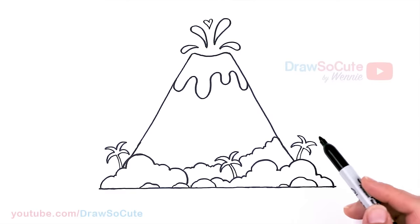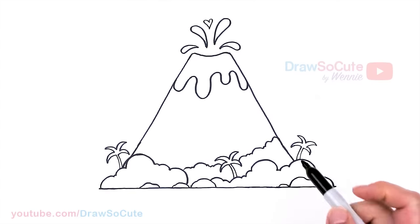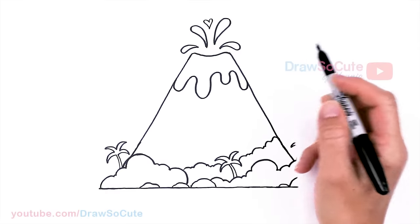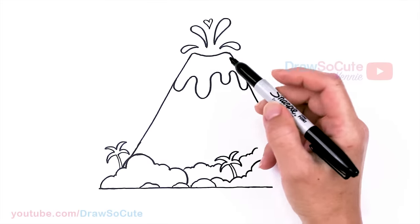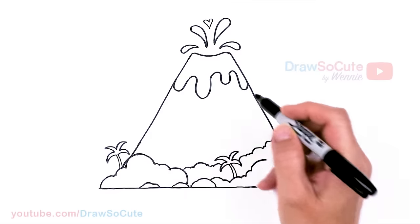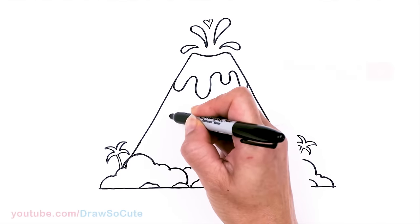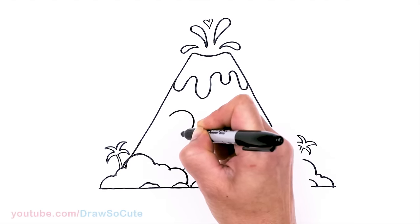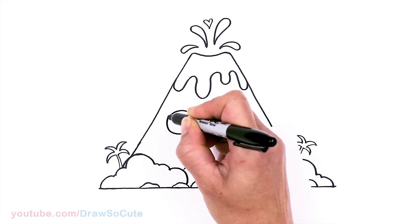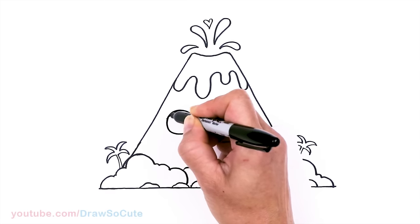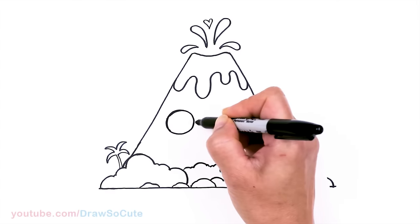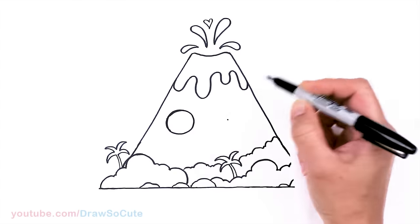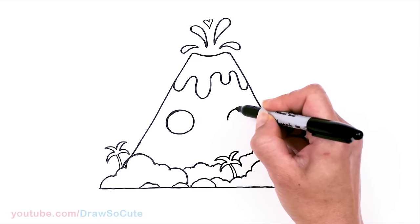So we definitely need to put in some DrawSoCute eyes. So I'm going to come about right here and just go ahead and draw two big circles, right across, all right here. And same thing there. And let's make them DrawSoCute eyes with two small circles inside for highlights and a curved line at the bottom, and shade in the top.